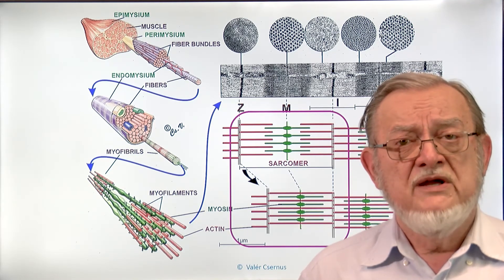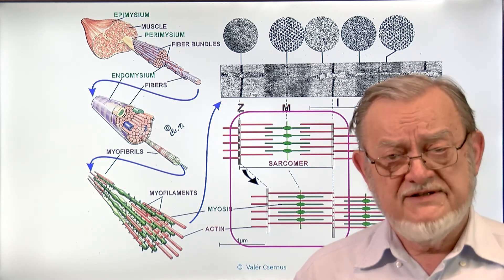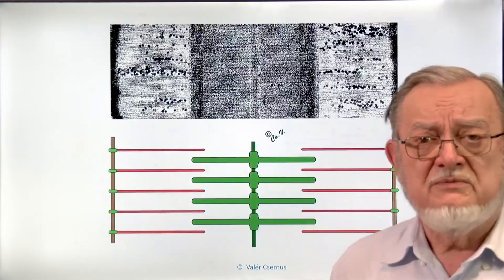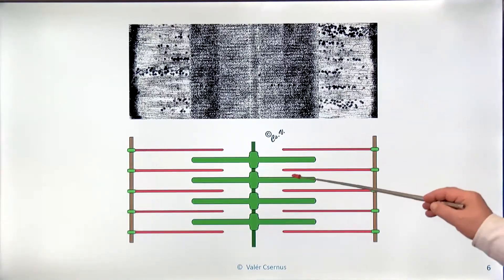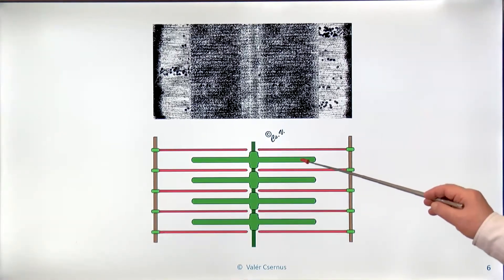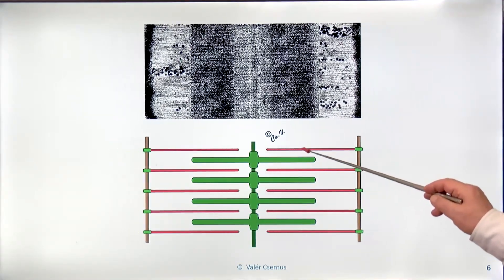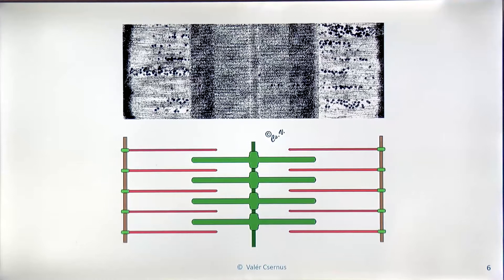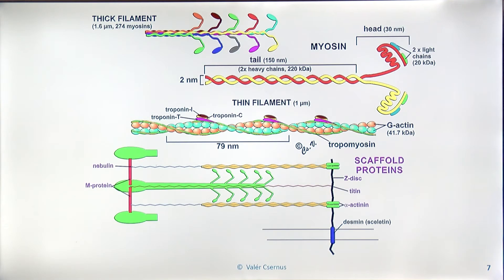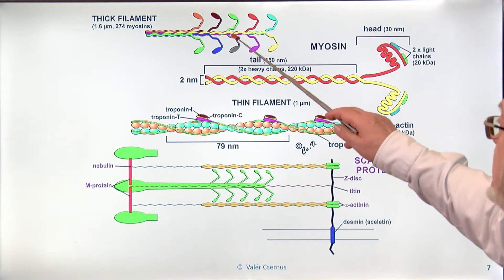In the rest of the lecture, I'd like to repeat the contraction mechanism of the muscles, especially the skeletal muscles. I know you studied this in biophysics in detail, but let me briefly summarize as a reminder. The most important feature of muscular contraction is that the two basic elements — the thick filaments (sometimes called myosin) and the thin filaments — do not change their size during contraction, but slide beside each other. The thick filament consists of a large number of real myosin molecules — 274 myosin molecules per filament.